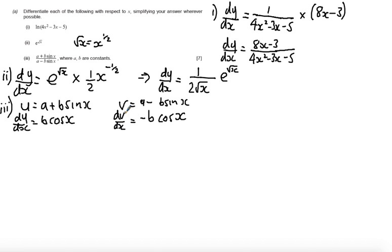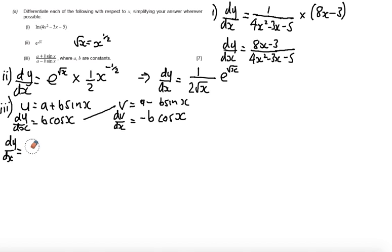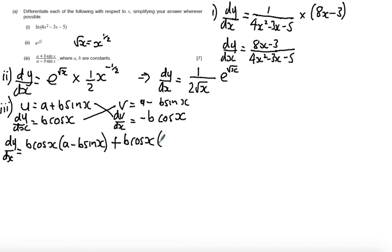Now substituting into the quotient rule — remember it's in the formula booklet if you need it. So dy/dx: the order is important; it's v times du minus u times dv, all over v squared. That gives us: b cos x times (a minus b sine x), plus b cos x times (a plus b sine x) — because multiplying by minus b cos x changes the middle sign to plus — all over (a minus b sine x) squared.